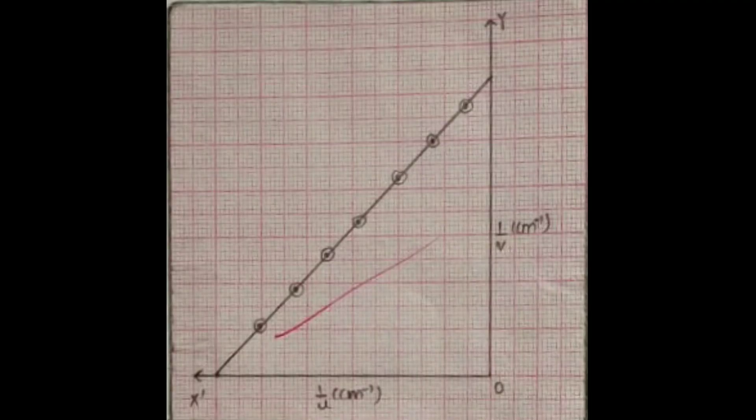This image shows the graph that is plotted between 1 by v and 1 by u. You can see there is no hyperbola compared to the previous graph. This graph comes out to be a straight line. So you can see there is a big difference between the two graphs, so note down this graph also very carefully.